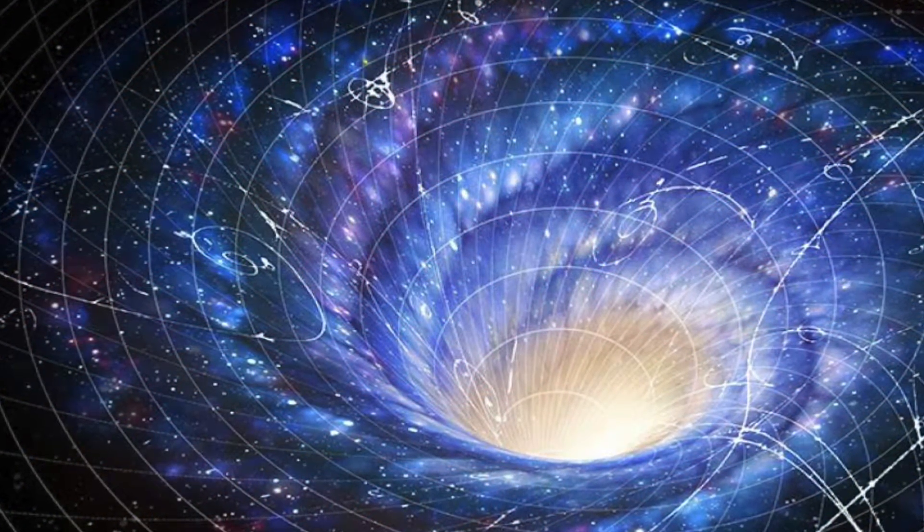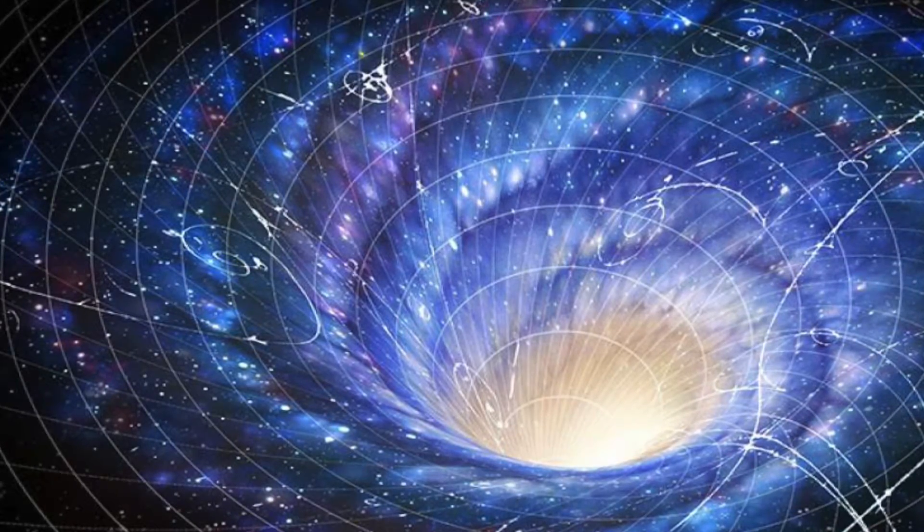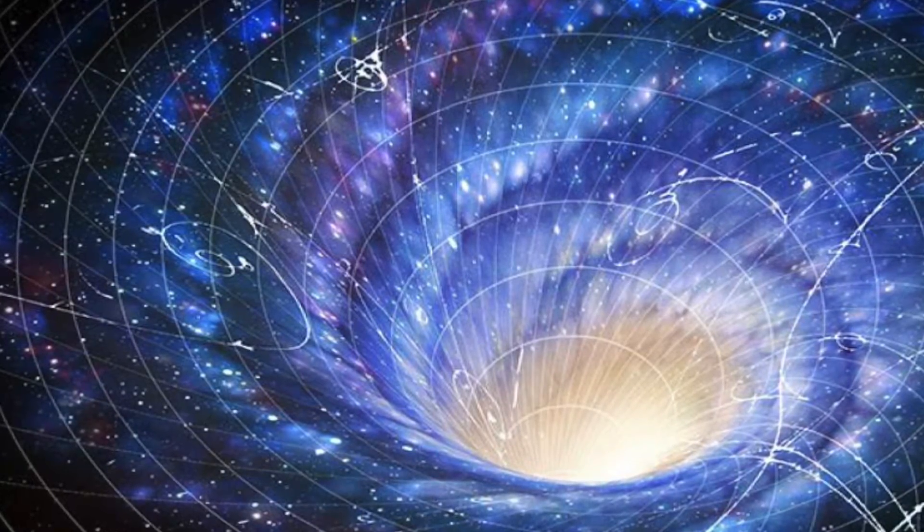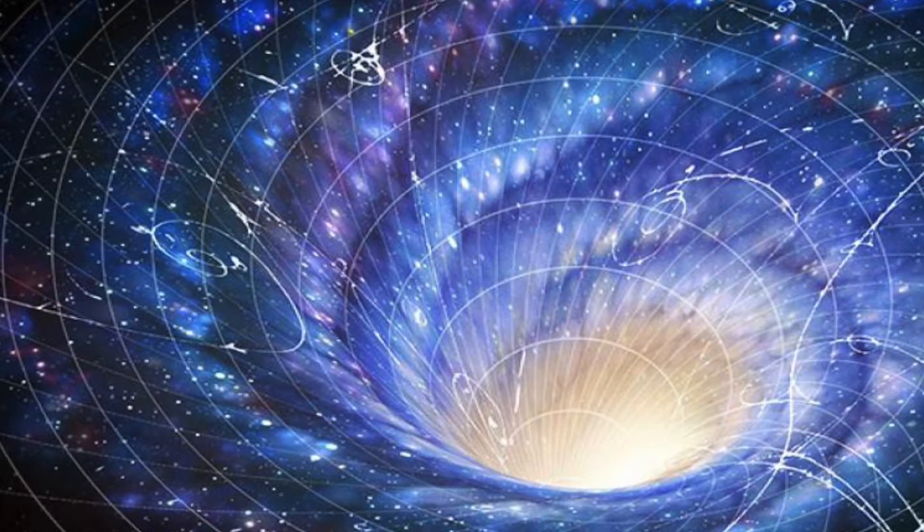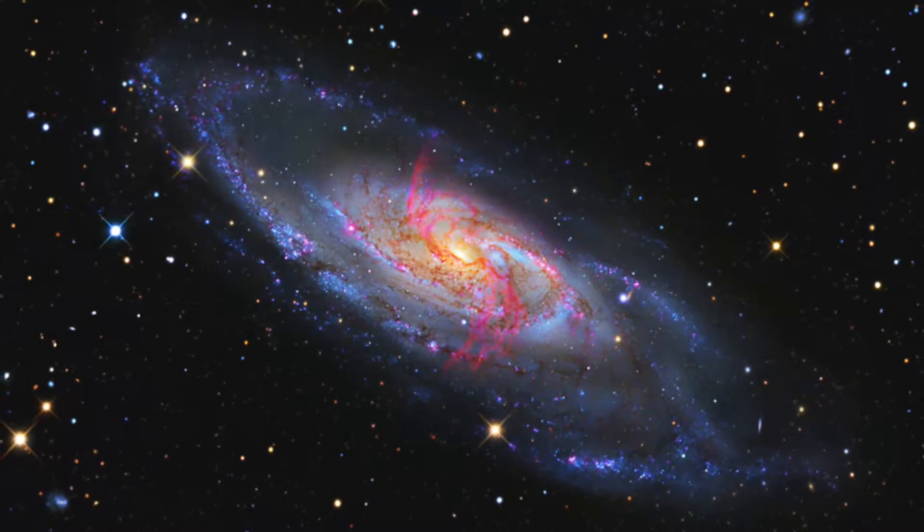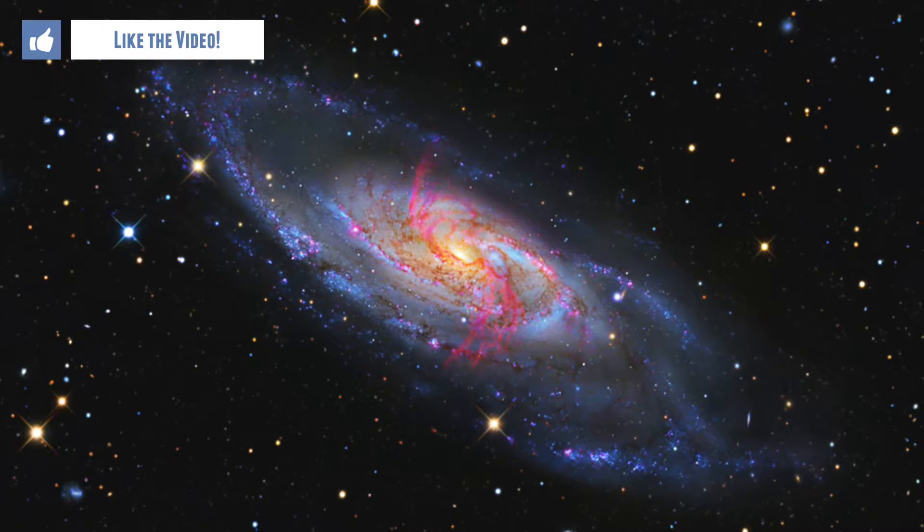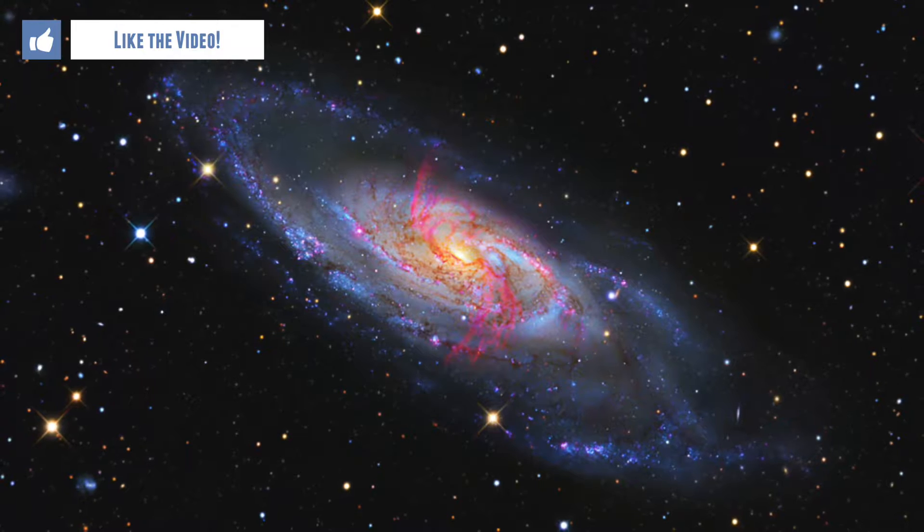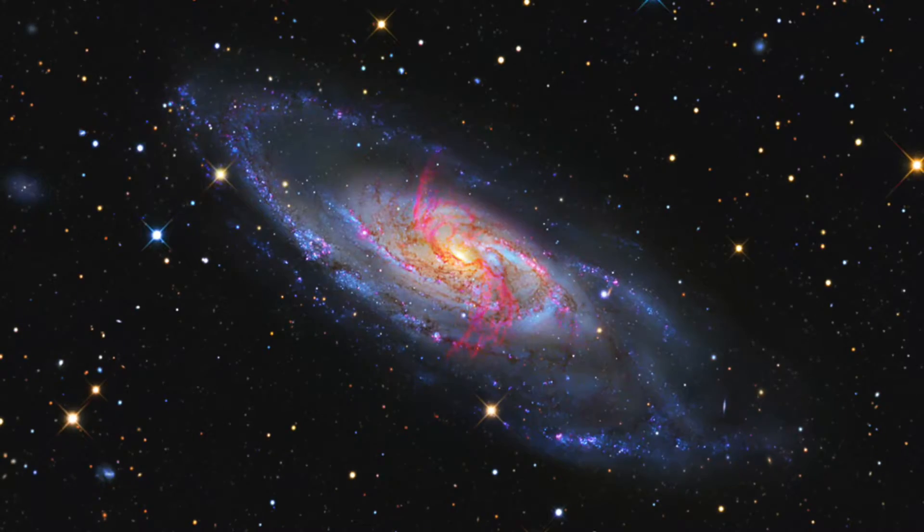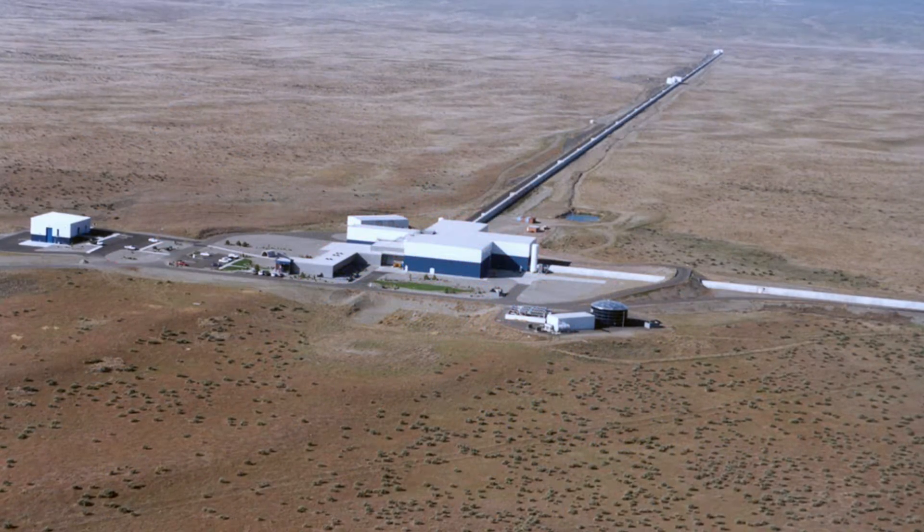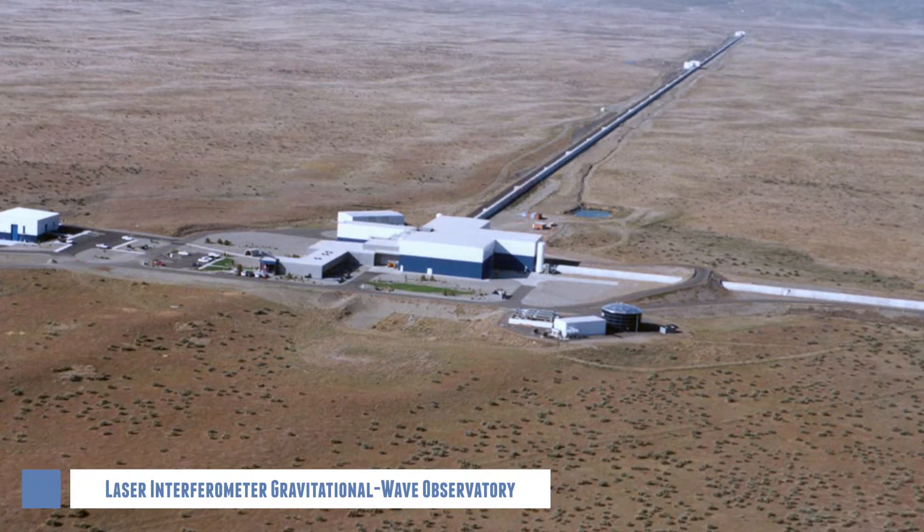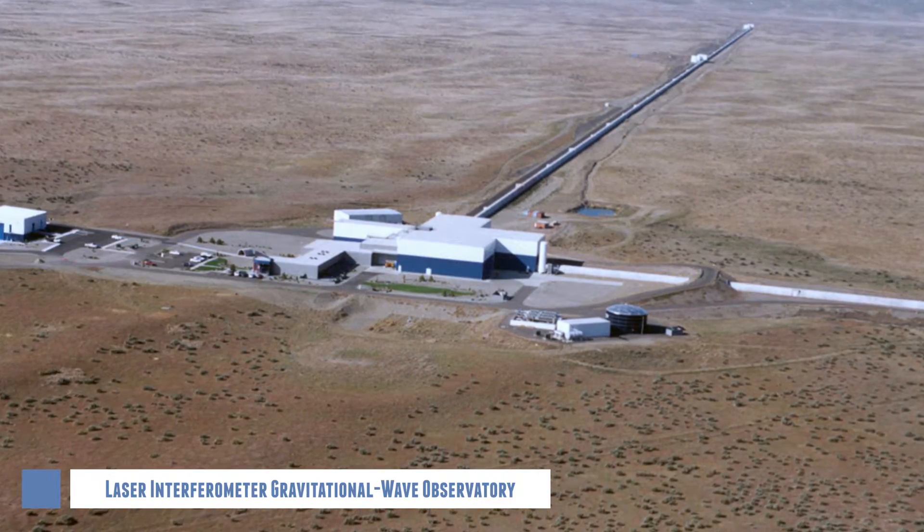A century after Albert Einstein rewrote the understanding of space and time, physicists have now confirmed one of the most elusive predictions of the general theory of relativity. In another galaxy a billion light years away, two black holes collided, shaking the fabric of space-time. Here on Earth, two giant detectors on opposite sides of the United States have detected these mysterious gravitational waves. After decades of trying to directly detect these waves, the recently upgraded LIGO appears to have succeeded, ushering in a new era in astronomy.